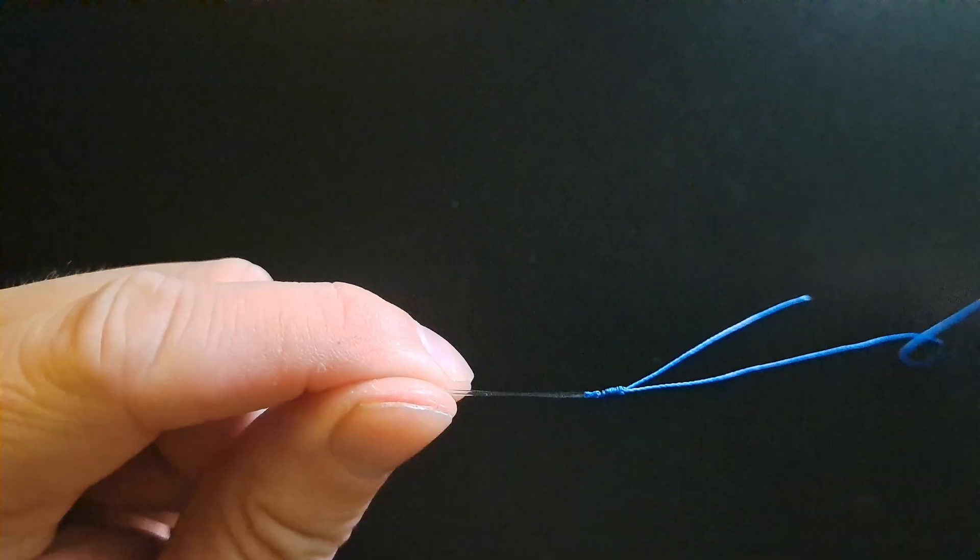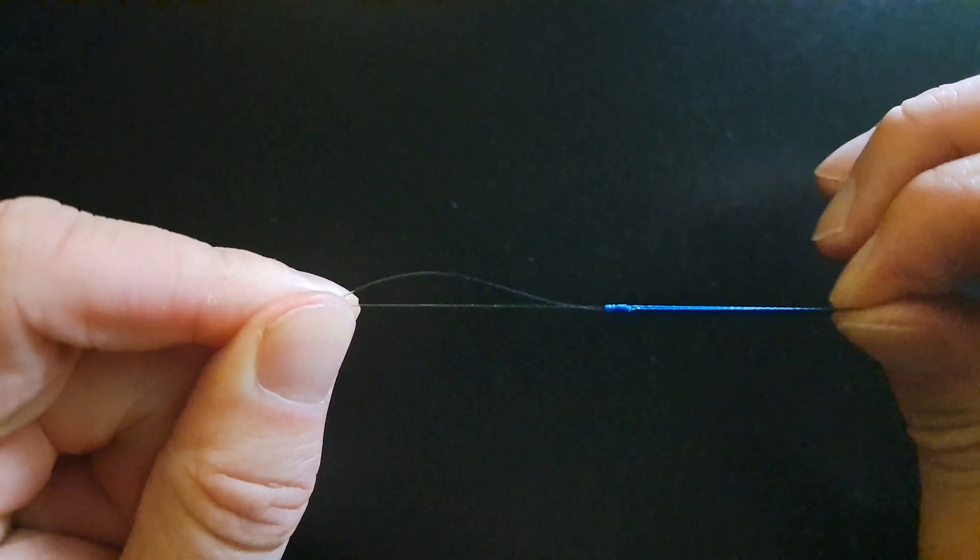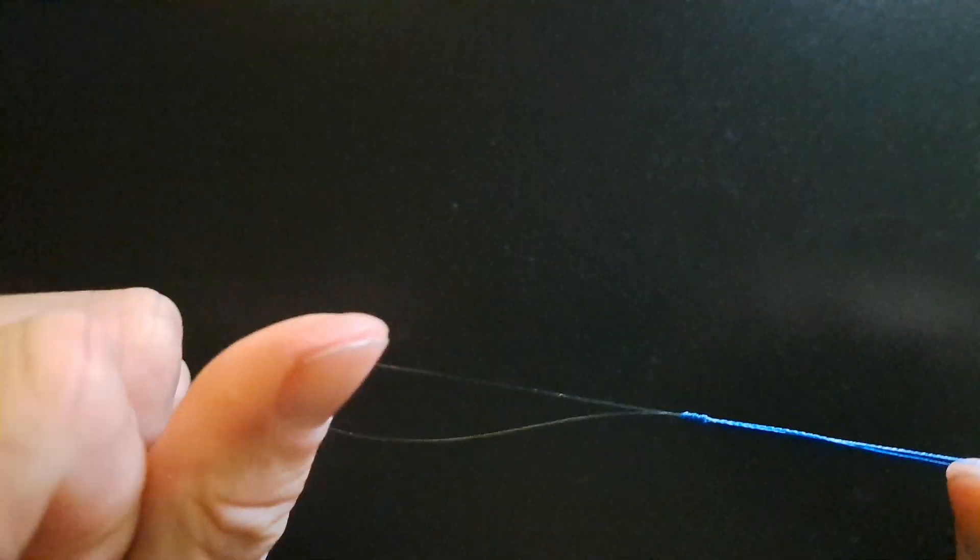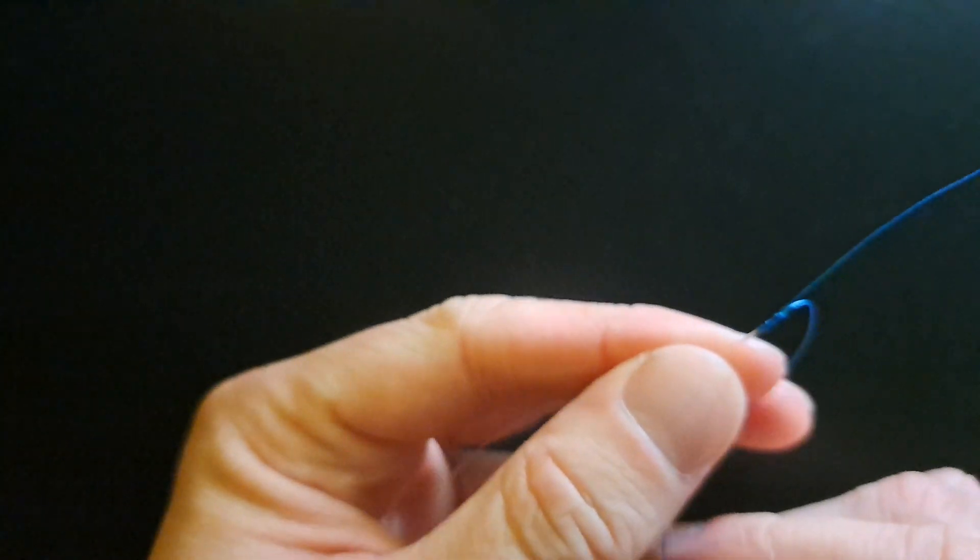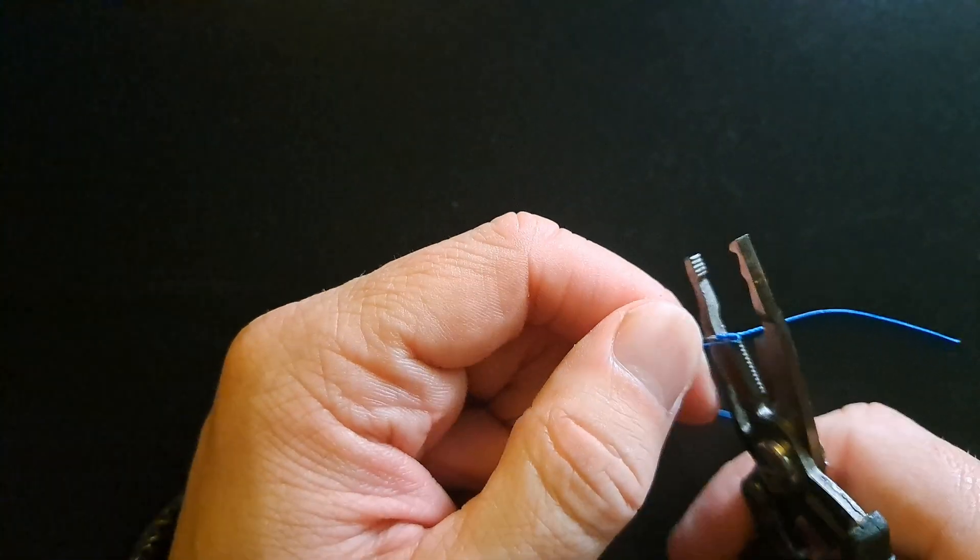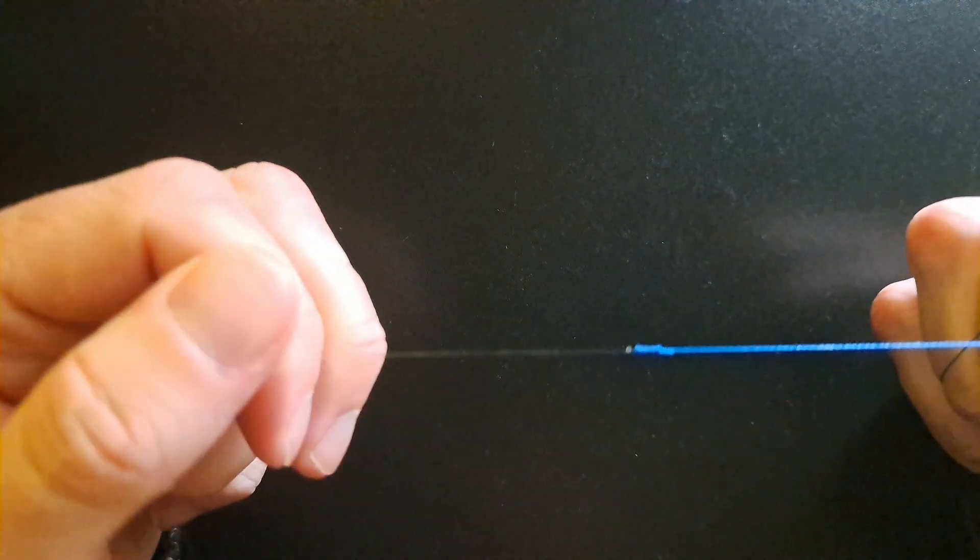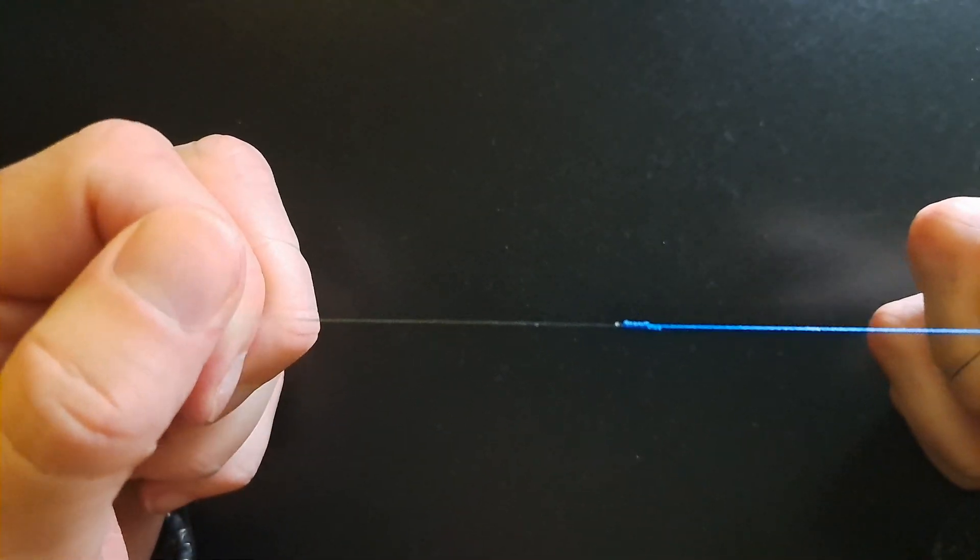Once that's tight, we can then just get the knot and slide it up. The only thing now left to do is just trim those tag ends. And there we go, one Albright knot.